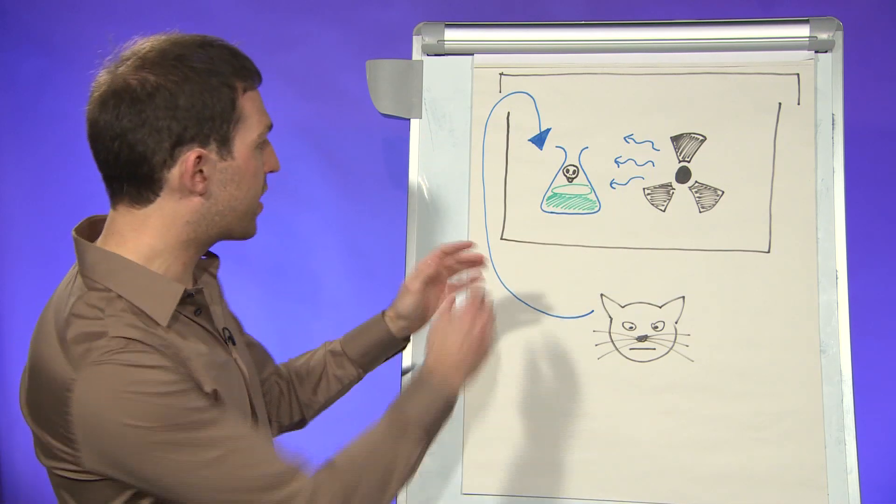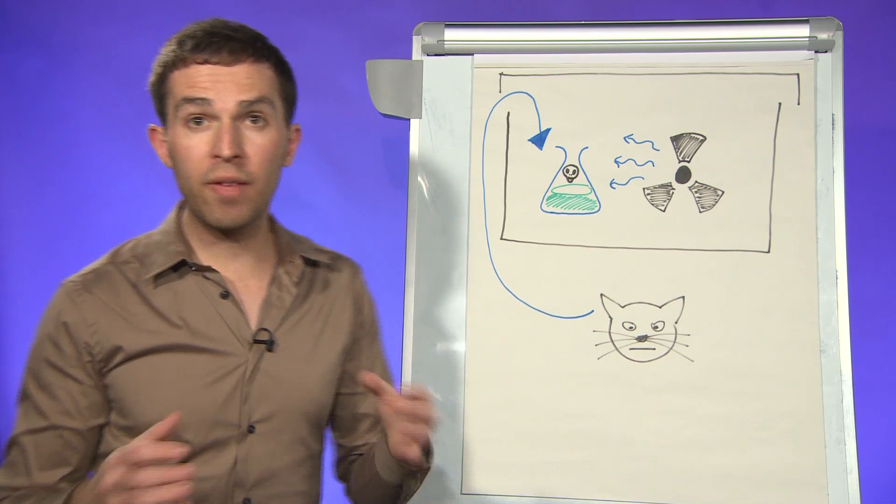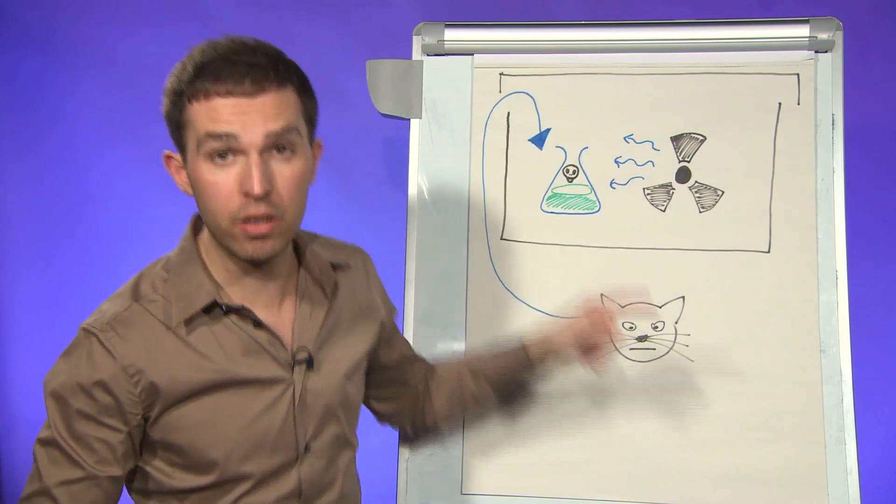Now when the radioactive source decays, it's going to release the poison. What if I were then to put a cat in that box and put the lid on it?